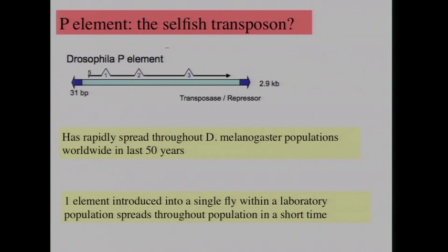Now turning to the Drosophila P element, which has a very interesting history. It's only recently been in Drosophila melanogaster — it's horizontally transmitted and can spread rapidly throughout wild populations. In just a few decades, the P element spread worldwide throughout Drosophila populations, in part because of shipments of fruit with fruit flies all over the world. You can simulate this in the laboratory — insert one element into one fly, put it into a population, and within a relatively short time, the genomes of those flies look like wild strains with perhaps 15 complete elements and 30 defective elements, and they become repressed and evolve to repress their own movement.